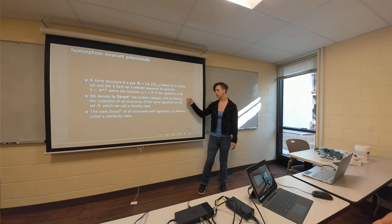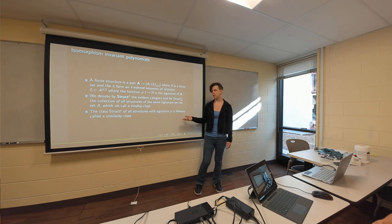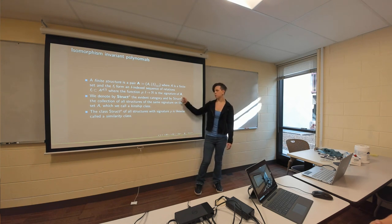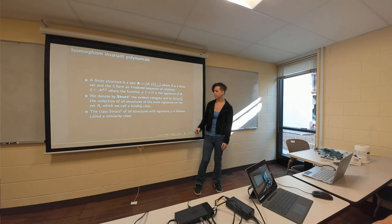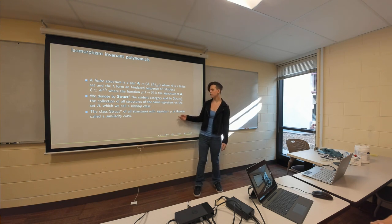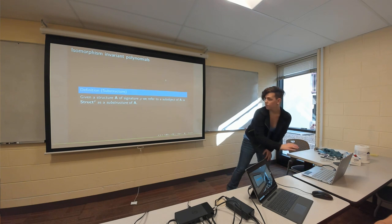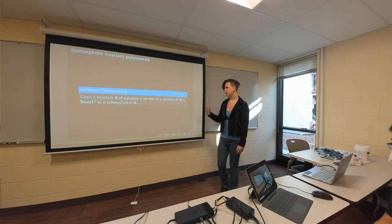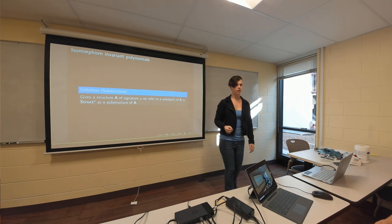Struct_ρ sub A denotes all structures of that signature on the same underlying set A — I call this a kinship class. For example, if ρ is the signature for directed graphs, then Struct_ρ(A) is the collection of all directed graphs on the same vertex set A. The class of all structures of signature ρ is called the similarity class, as in universal algebra. A subobject of a structure is called a substructure, and in the general categorical setting it literally is a subobject of the corresponding functor.